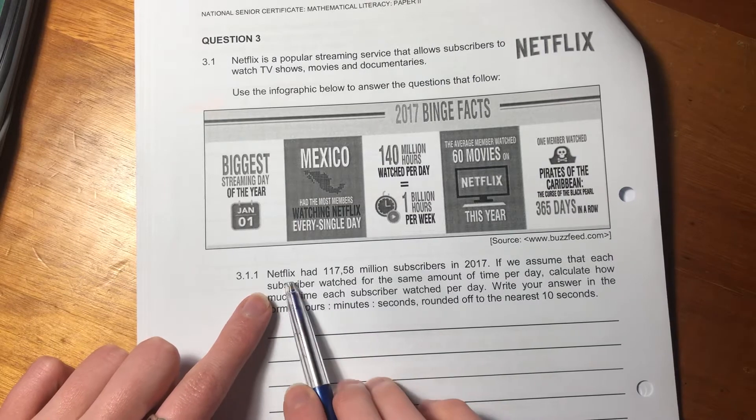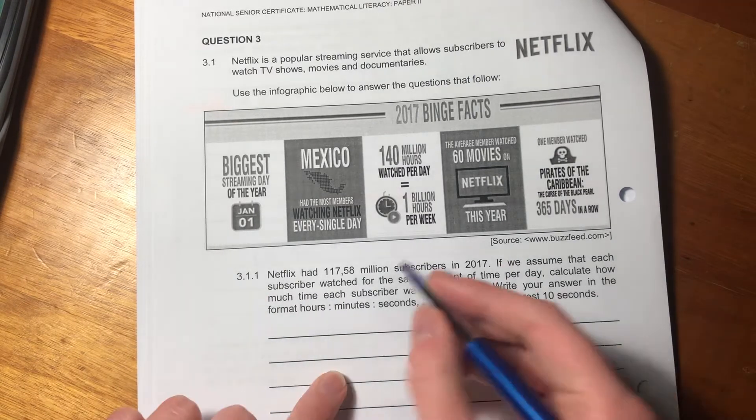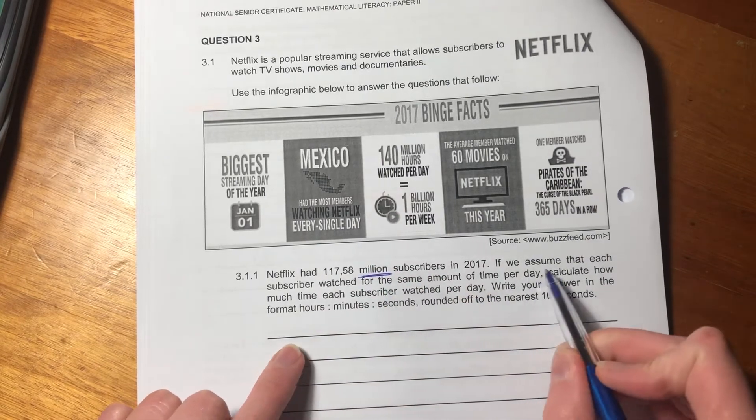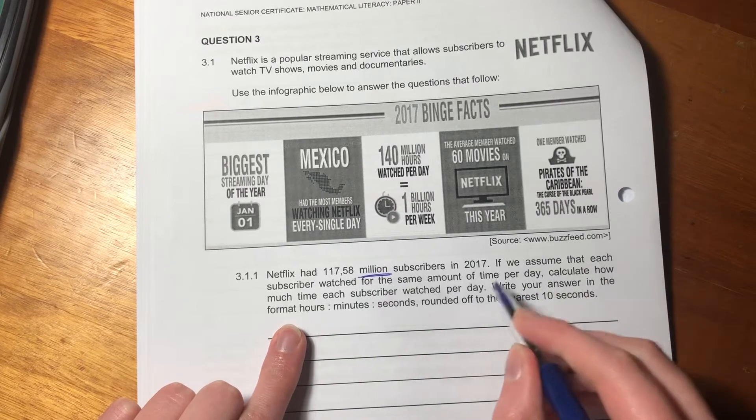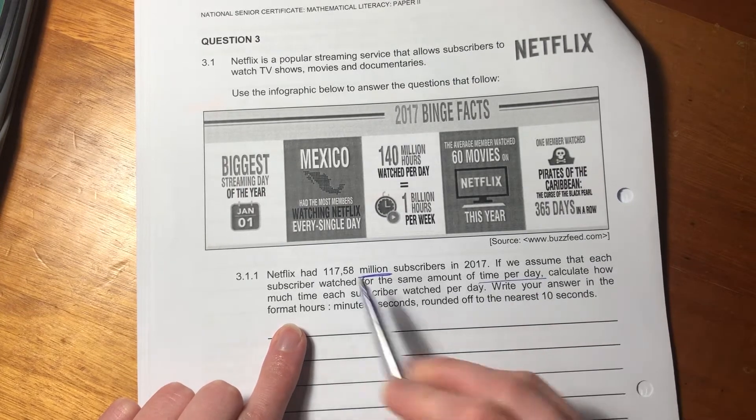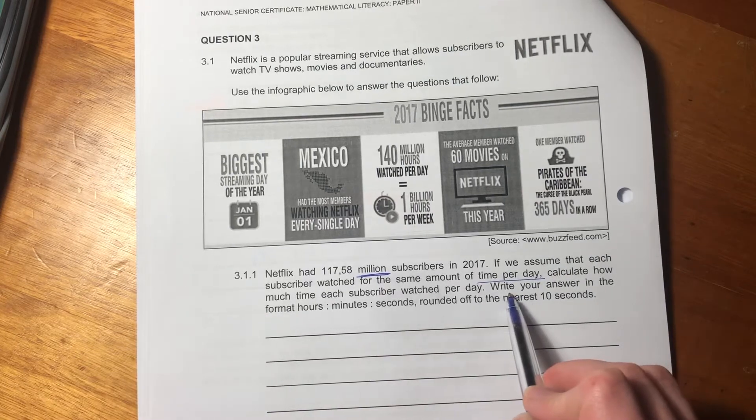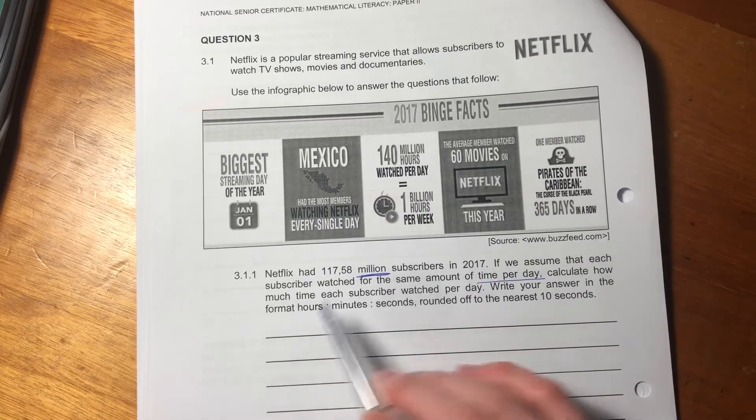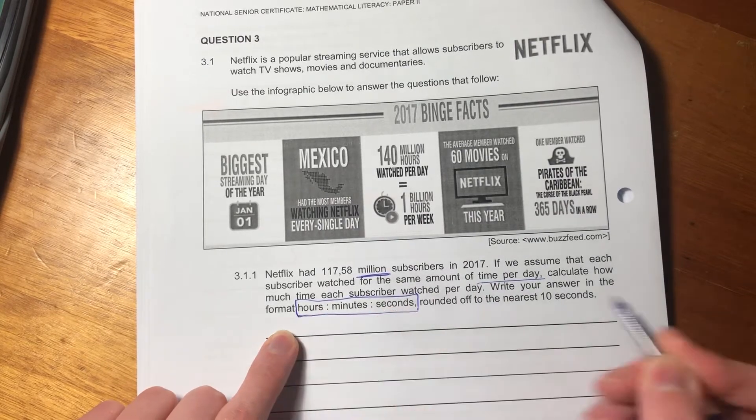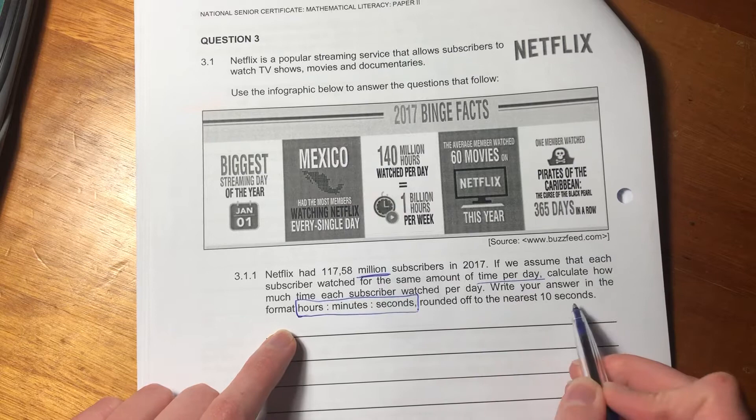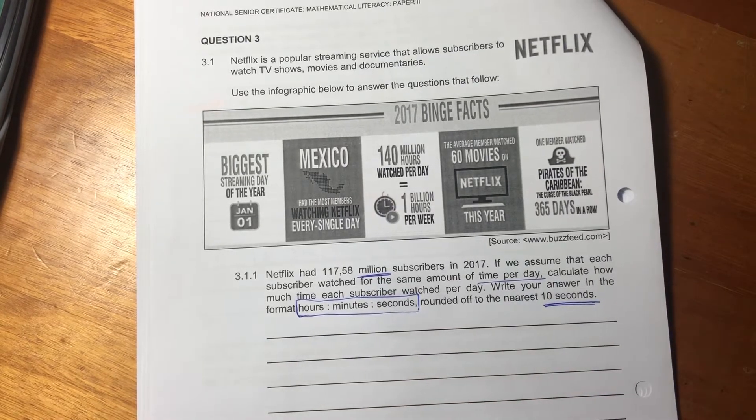So it says Netflix had 117.58 million subscribers, important million, in 2017. If we assume that each subscriber watched for the same amount of time per day, calculate how much each subscriber watched per day. Write your answer in the format hours to minutes to seconds. Round off to the nearest 10 seconds. So there's a lot of moving pieces here.